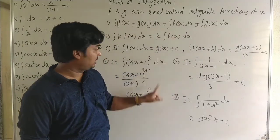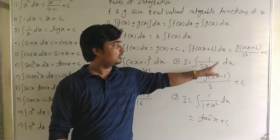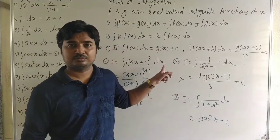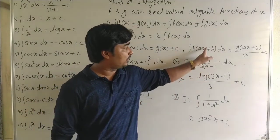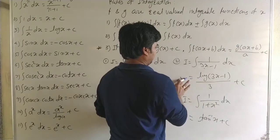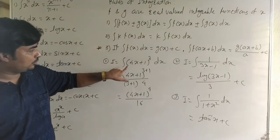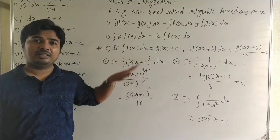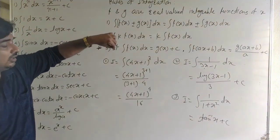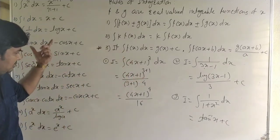To summarize: when the standard integral has x replaced only by a linear function ax + b, we can directly integrate and divide by the coefficient of x. But when x is replaced by a non-linear form — like x², x³, sin x — direct integration does not apply. In those cases, we use the substitution method or other methods, which we will see in the next lectures.